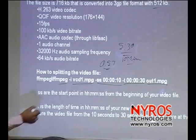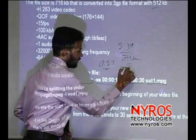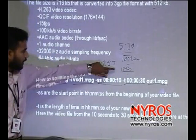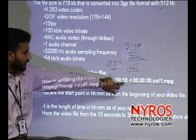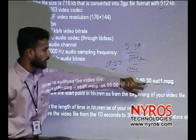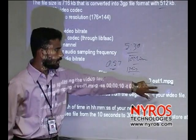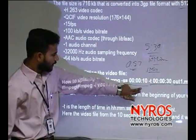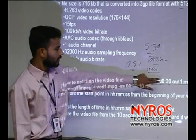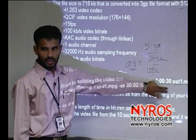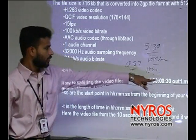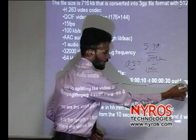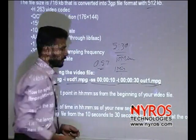For a 1-minute file, from 10 seconds to 30 seconds can be stored in this output file. After that, after 30 minutes, the section from 31 minutes to 60 seconds goes to another file. You can place that in this output file.